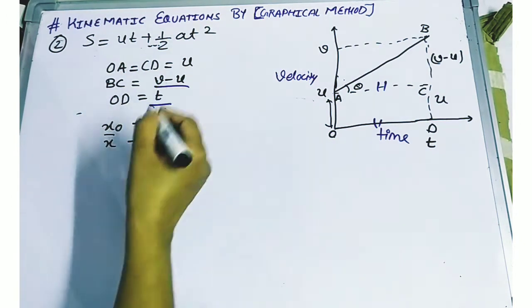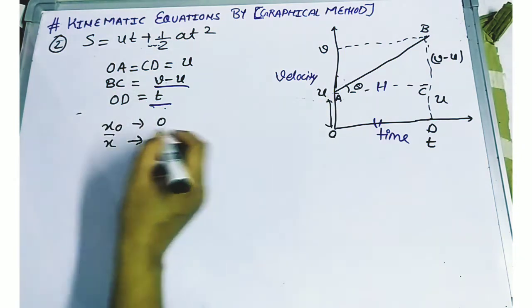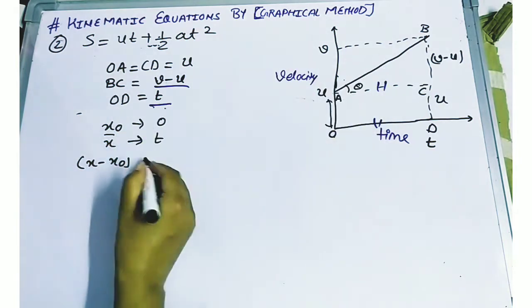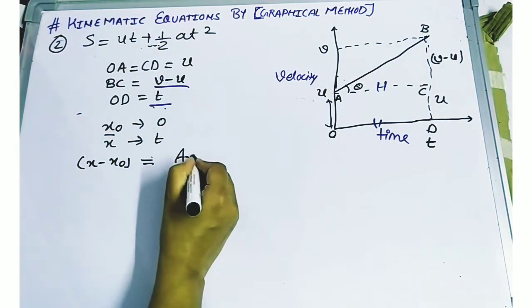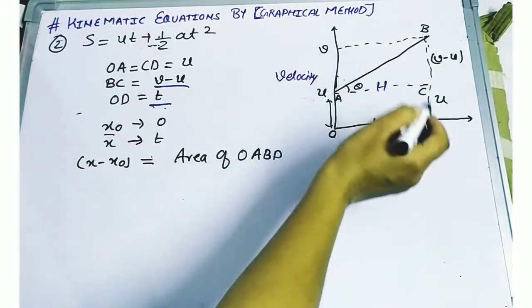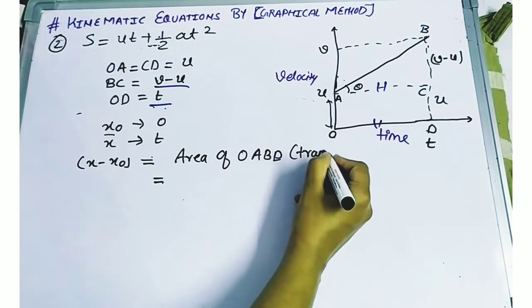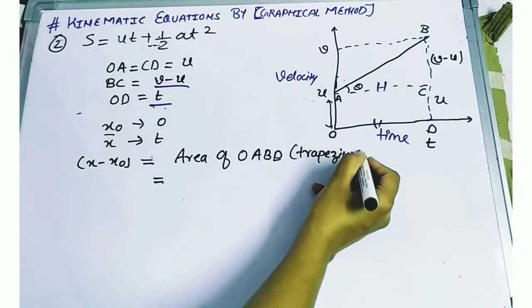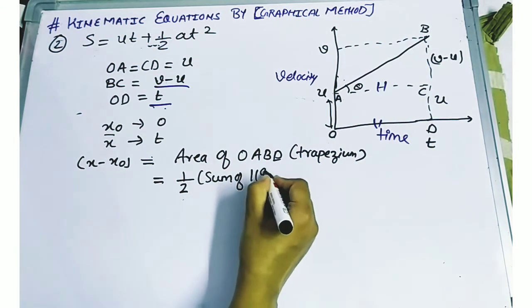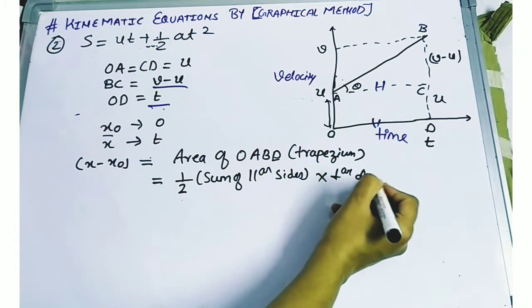After some time its position reaches to its maximum at time t. The velocity under the velocity-time graph clearly shows that the displacement occurred from x to x naught. It means the distance travelled will be the area of this figure OABD, which is nothing but a trapezium.